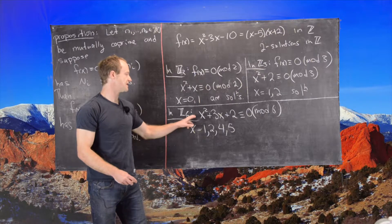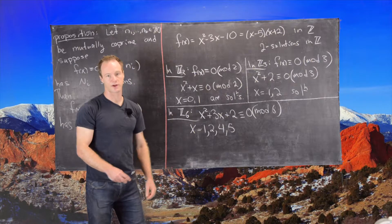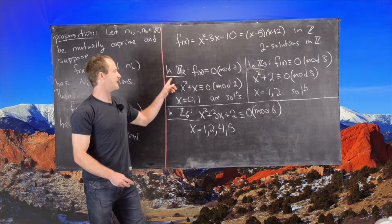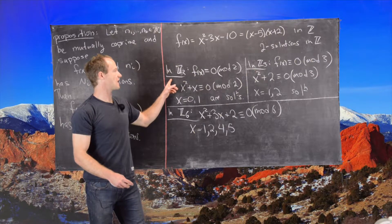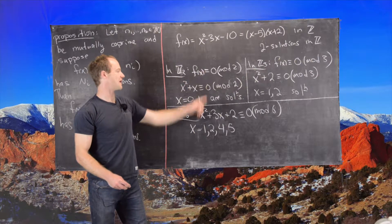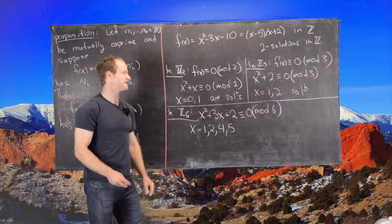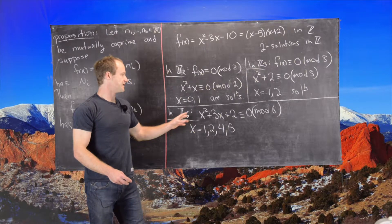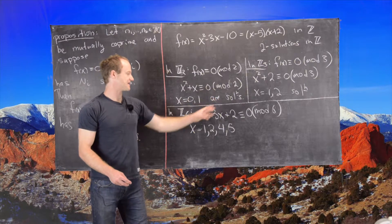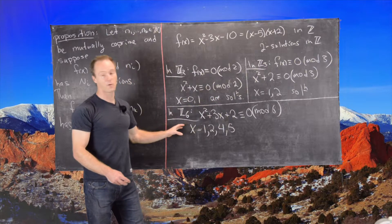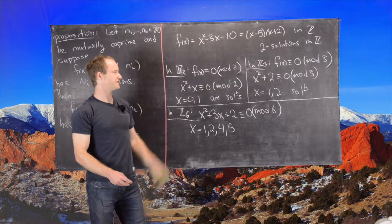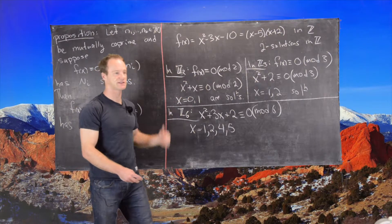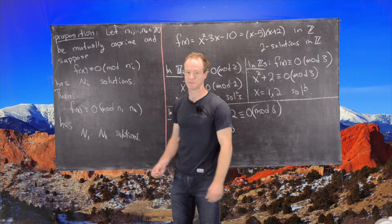There are only two remaining values to check: zero and three, which are not solutions. So we have two solutions mod 2, two solutions mod 3, and four solutions mod 6 — which is 2 times 2. This gives us evidence that the proposition is true.